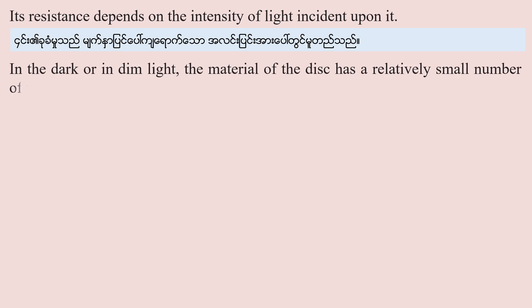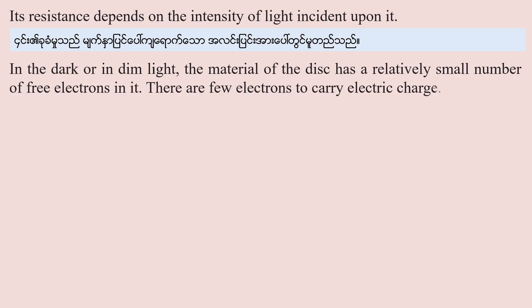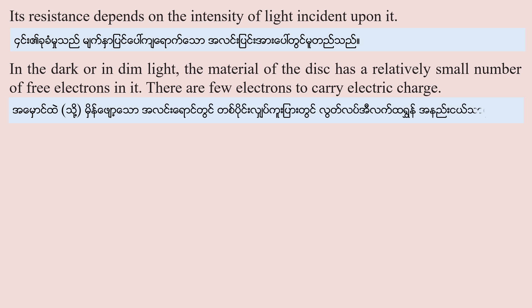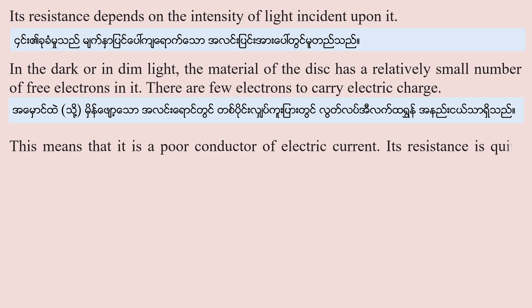In dark or in dim light, the material of the disk has a relatively small number of free electrons in it. There are few electrons to carry an electric charge, meaning it is a poor conductor. Its resistance is quite high, approximately nearly equal to one mega ohm.